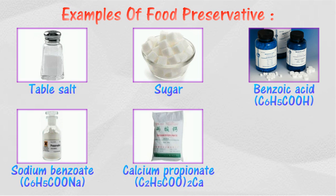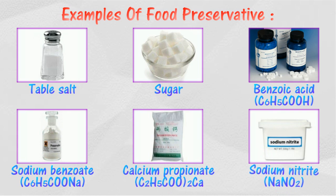Calcium propionate is used to preserve bread and other baked goods. Meanwhile, sodium nitrite is commonly used to preserve frozen meat, tinned meat, and also processed food such as sausages and burgers.